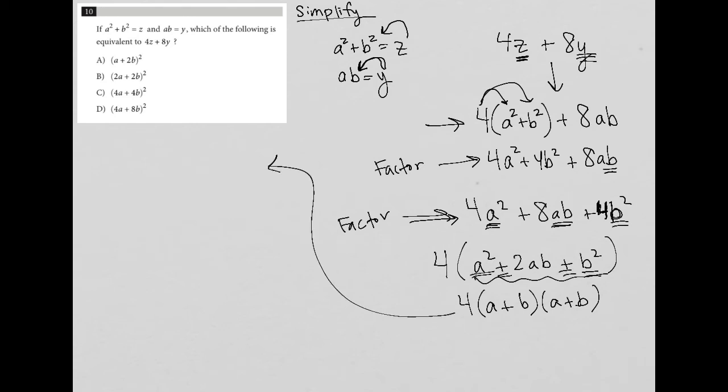And I still have a 4 out in front. So I'm going to go over here for more space. So again, 4 and then (a + b)(a + b). I have 2 of these, so I can just call it (a + b)² with a 4 out in front.